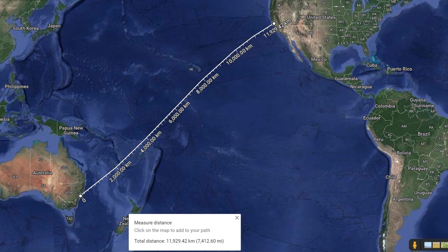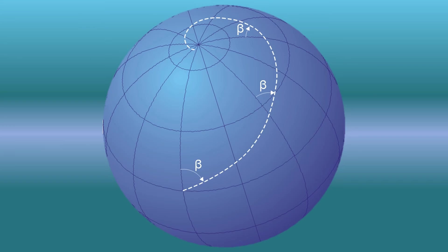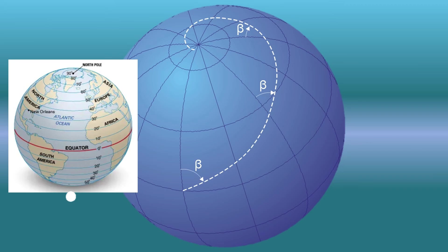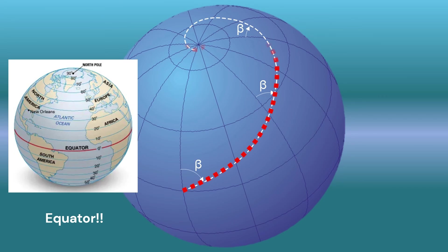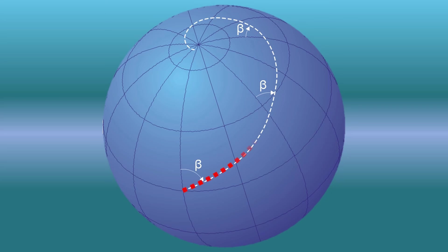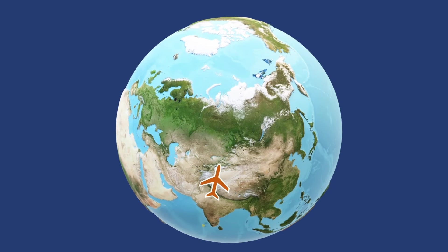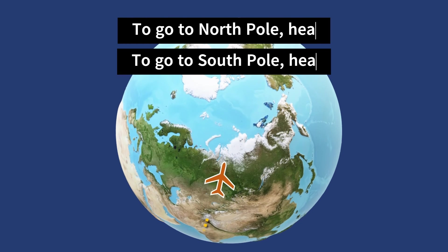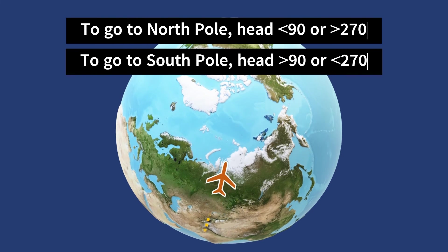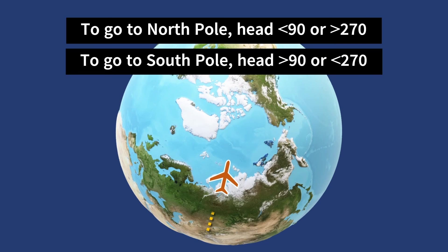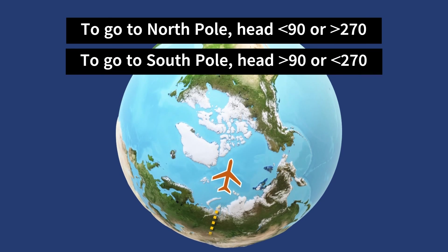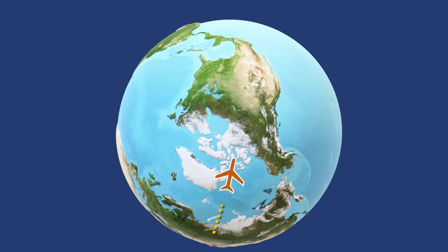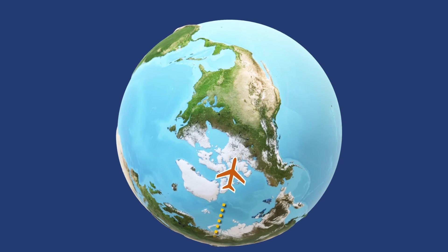One more fact about the rhumb line: if you start from the equator with any azimuth or bearing — say 080 — and continue on that same bearing, you will eventually reach the north pole. So next time you plan to visit the poles on an aeroplane, take any direction greater or lesser than 90 or 270 degrees and you will get there eventually.